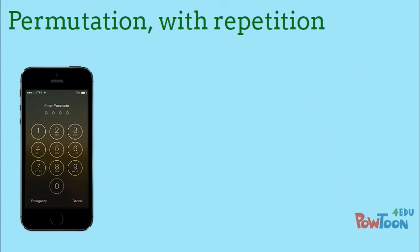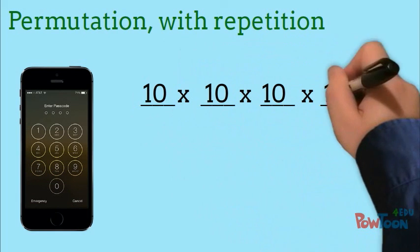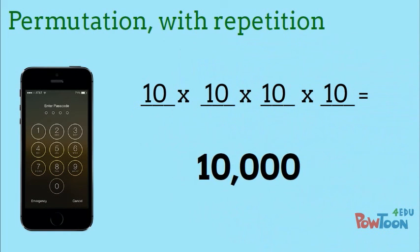Consider a four digit passcode. Each number in the code can be chosen from the digits 0 through 9. So there are four positions and each position has 10 options because it's possible to repeat numbers. That gives us 10 times 10 times 10 times 10, or 10,000 different passcodes to choose from.